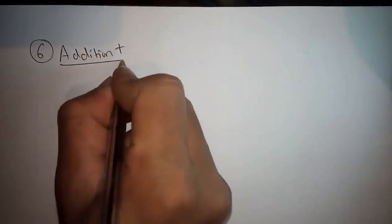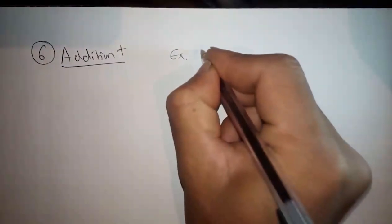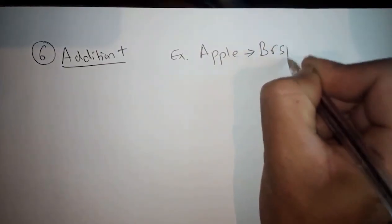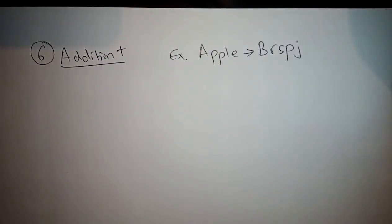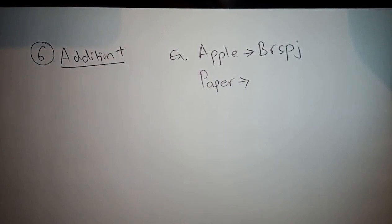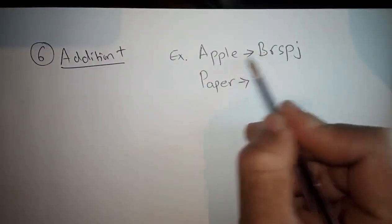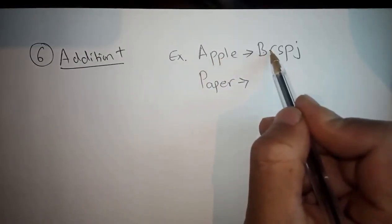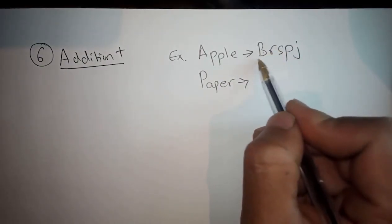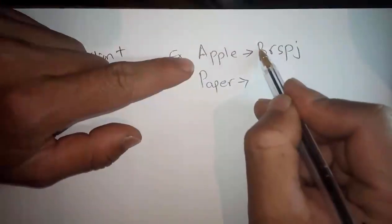Next, the sixth type is Addition Plus. For example, if Apple is written as BRSPJ, and we need to code Paper, how will Paper be coded? Usually A becomes B, but P should become Q. So in this type of case, we look at plus one.